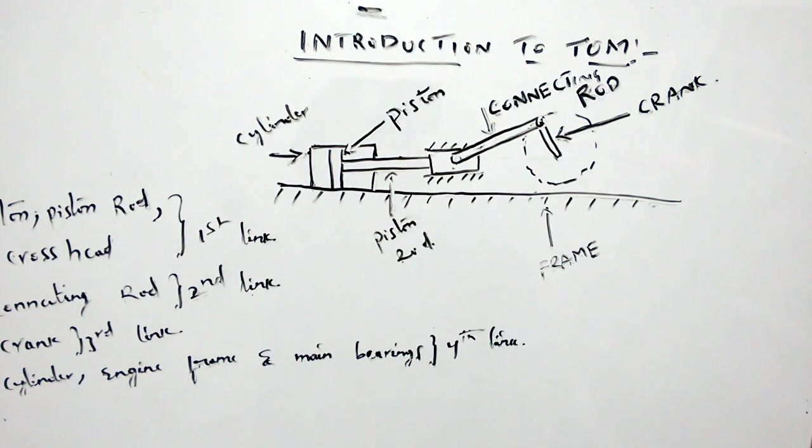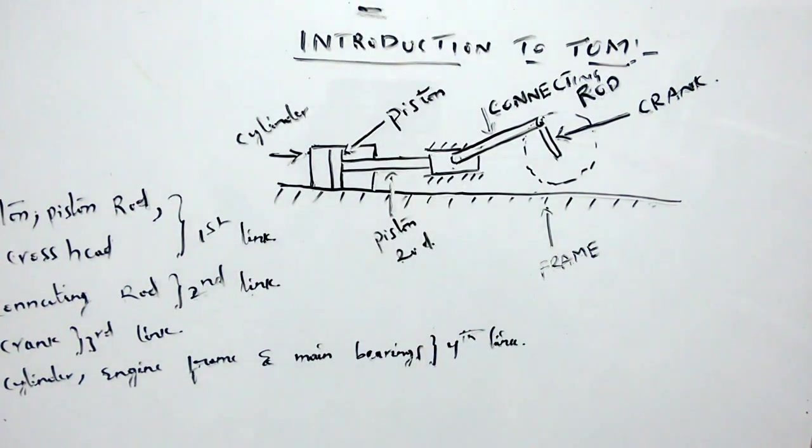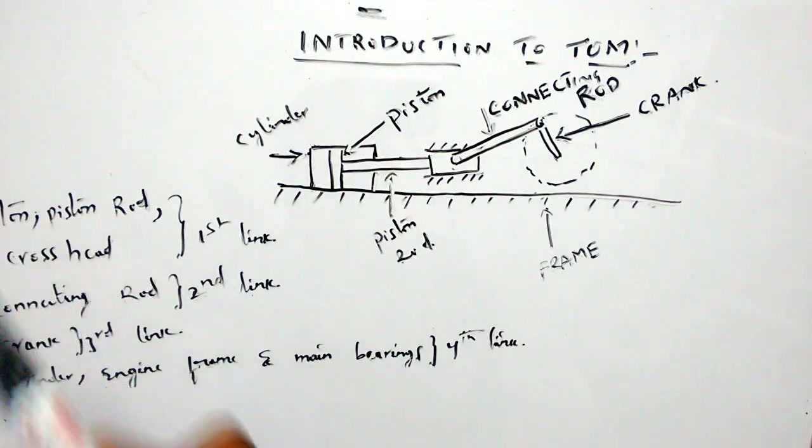Every time, the kinematic link need not be in motion. Sometimes it can also be in a stationary position. For example, if you take this reciprocating steam engine, the piston, piston rod, and cross head combination is a first link.